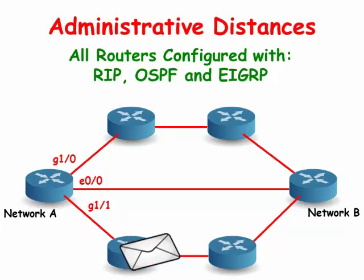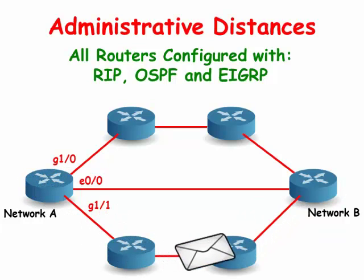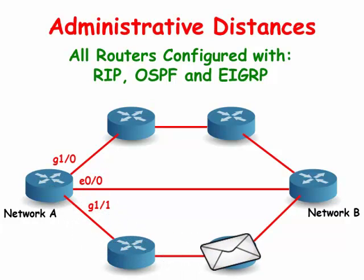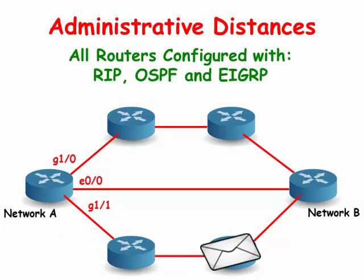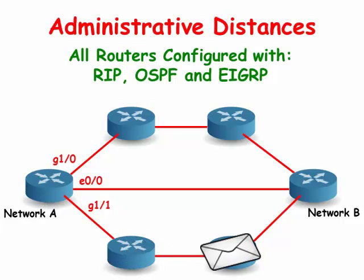In this last example, we have configured RIP, OSPF, and EIGRP on all the routers. RIP has an administrative distance of 120, OSPF has an administrative distance of 110, and EIGRP has an administrative distance of 90. When the network A router has to decide which interface to forward the packets out of, it will choose gigabit Ethernet 1/1 because EIGRP has the lowest administrative distance and the router will take whatever path it selects.